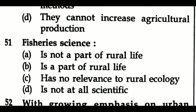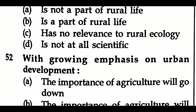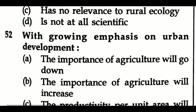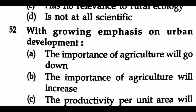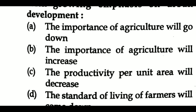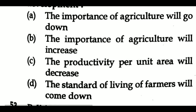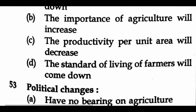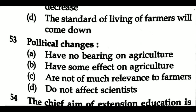Question 51: Fishery science — Option A: is not a part of rural life, Option B: is a part of rural life, Option C: has no relevance to rural ecology, Option D: is not at all scientific. Question 52: With growing emphasis on urban development — Option A: the importance of agriculture will go down, Option B: the importance of agriculture will increase, Option C: the productivity per unit area will decrease, Option D: the standard of living of farmers will come down. Question 53: Political changes — Option A: have no bearing on agriculture, Option B: have some effect on agriculture, Option C: are not of much relevance to farmers, Option D: do not affect scientists.